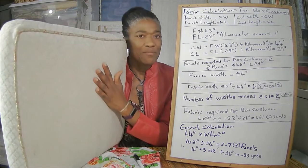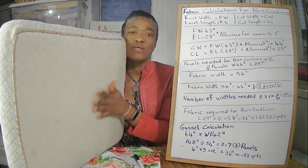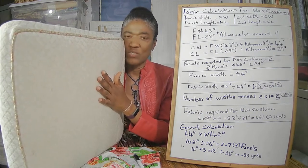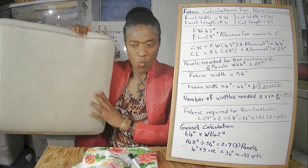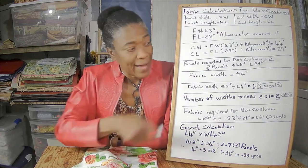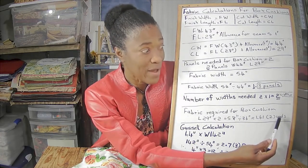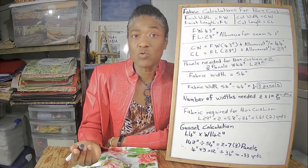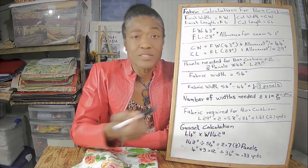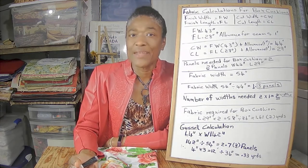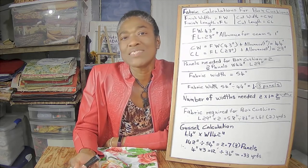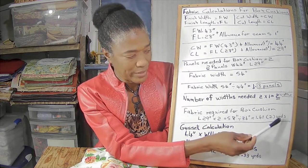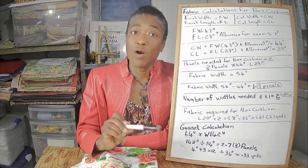Always round up when buying fabric for soft furnishings — never round down. So instead of 1.61, we will ask for 2 yards of fabric. If you want to convert yards to meters, multiply by 0.95 to find how many meters you need. But that's just for the panels — now let's look at the gusset.